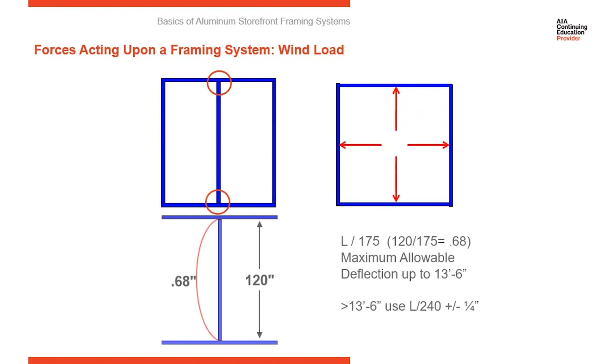So deflection limitation is referred to as L over 175. L represents length. So in this case, our length is 10 foot tall. So we're going to put 120 over 175. And the maximum allowable deflection for this elevation is 0.68. Now we use L over 175 up to a height of 13 foot 6 inches. Anything above 13 foot 6 inches, we use L over 240 plus minus quarter inch. But that's our deflection limitation for every frame.